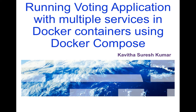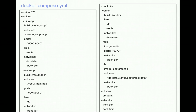Let us start the demo by reviewing the docker-compose.yml file. Here we have the docker-compose.yml file which is used by the voting application to define and configure the application. The voting application uses five different services: the voting app, result app, worker, Redis, and the Postgres services.